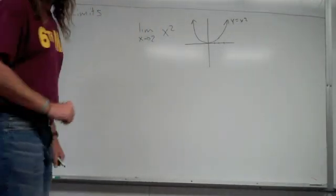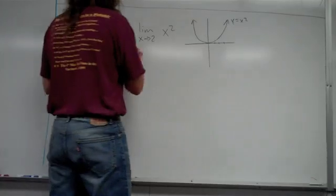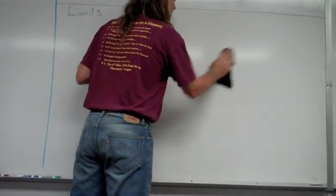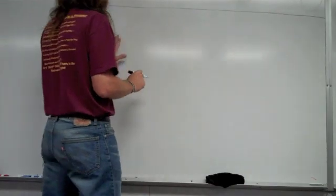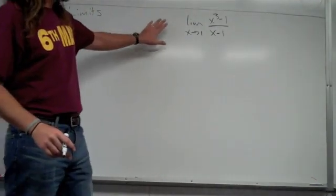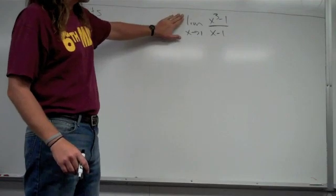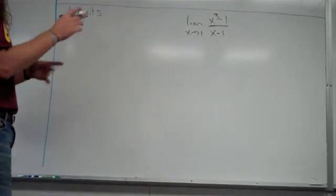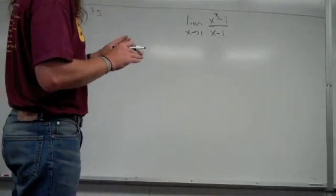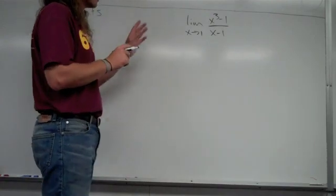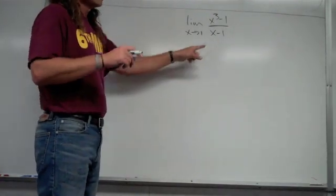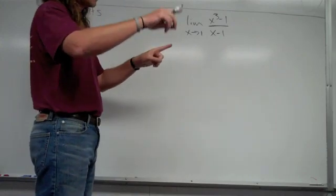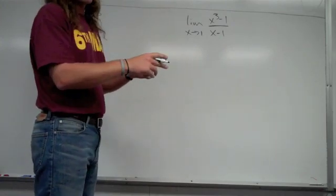Now, about the hole in the graph — a lot of times they will give you a problem like this. The limit as x approaches 1 of x cubed minus 1, over x minus 1. A more complicated function. The same idea: as x is approaching 1 from the left and the right hand side — and it's important that it's from both sides — what is the y value approaching?